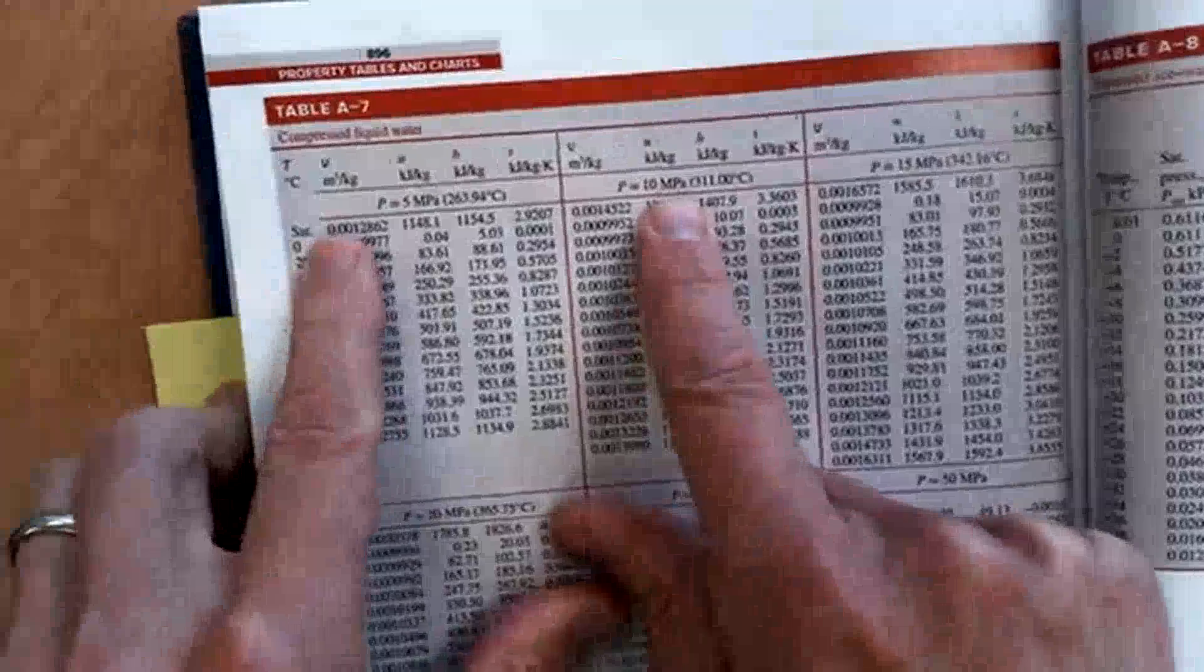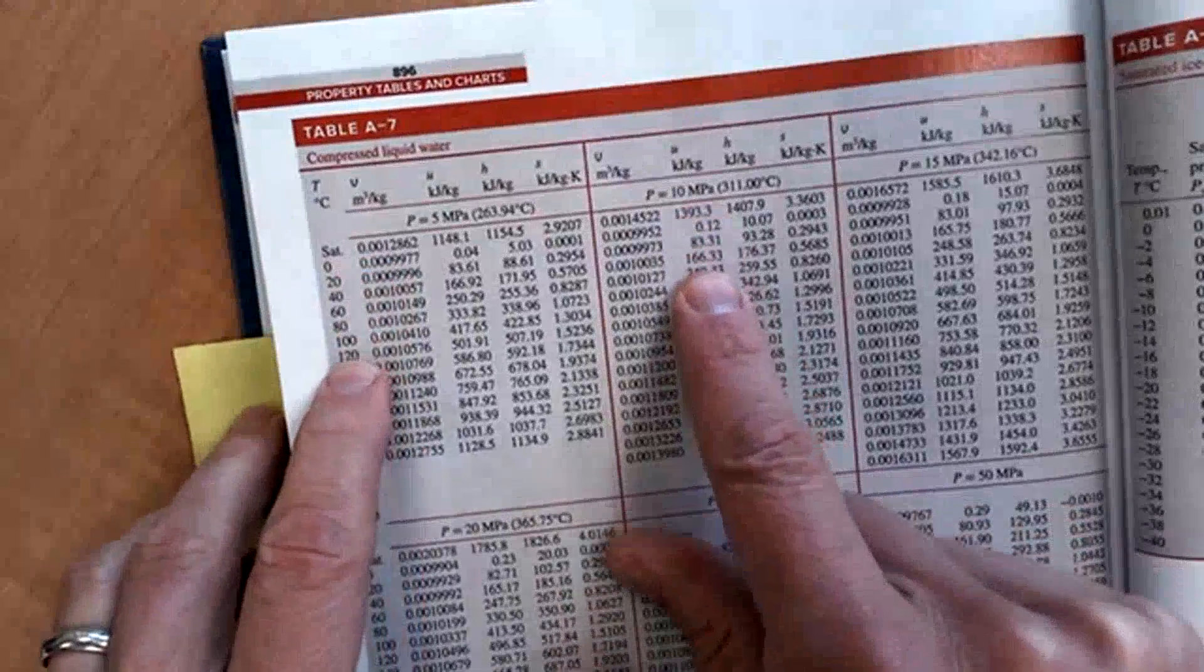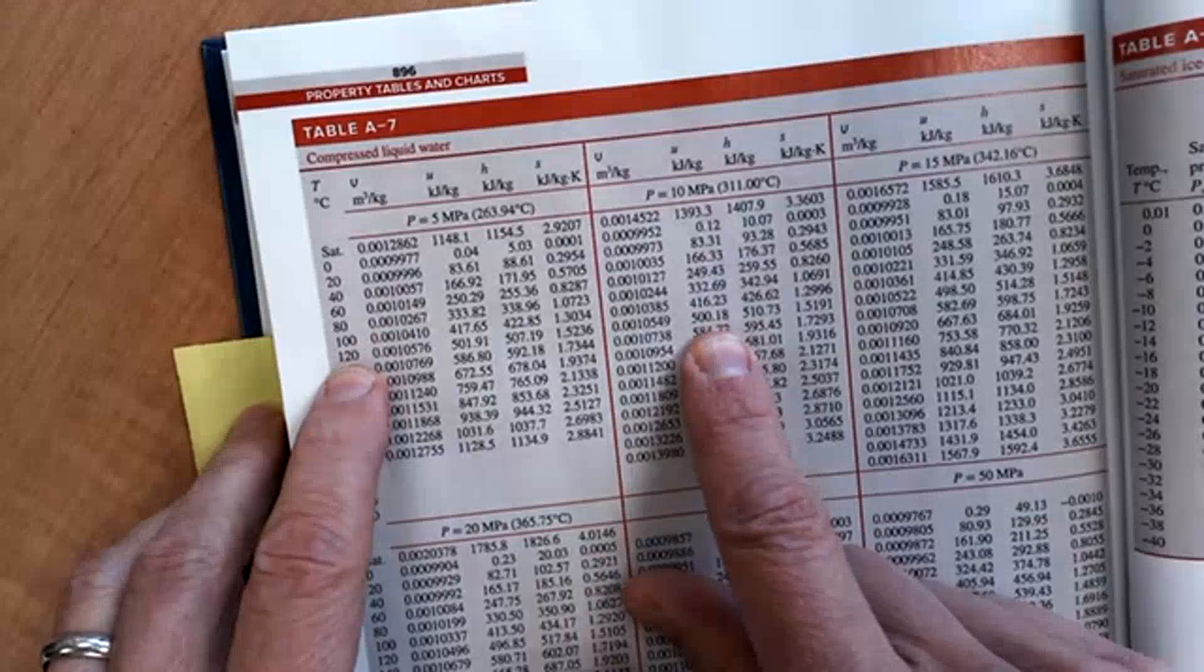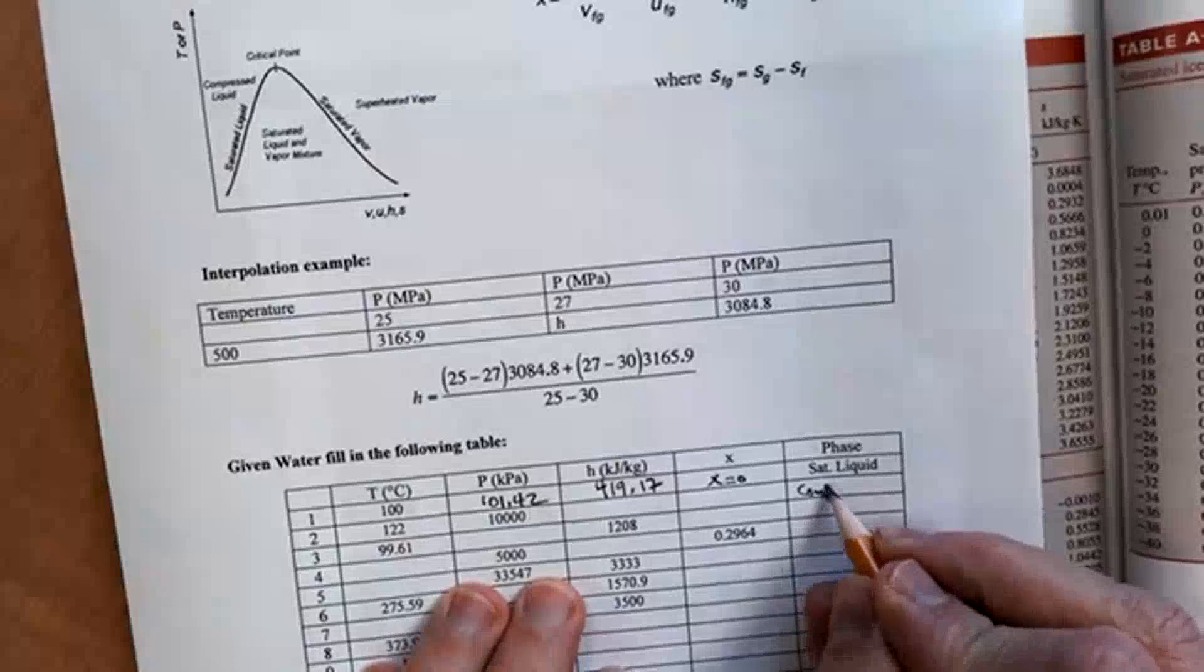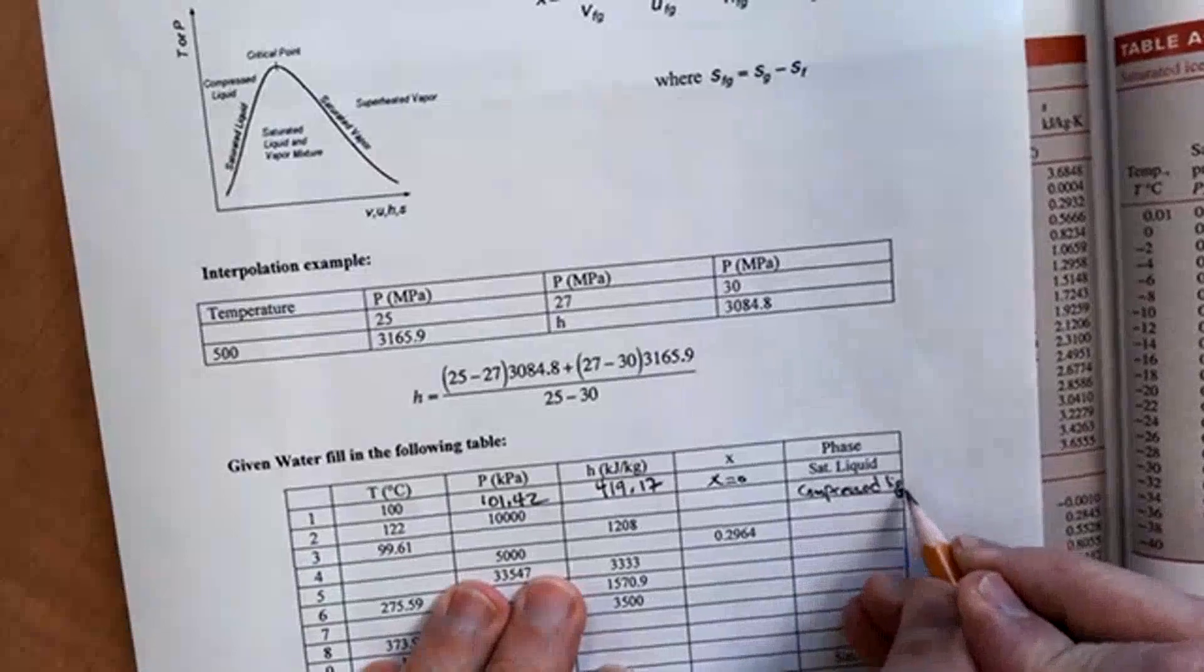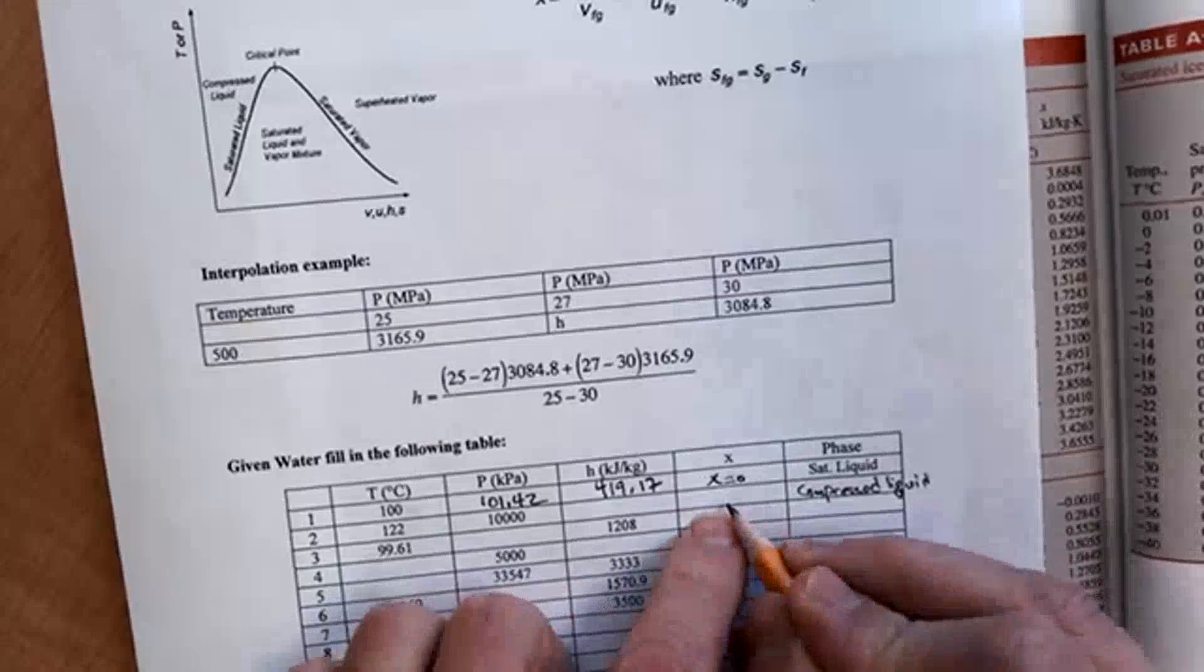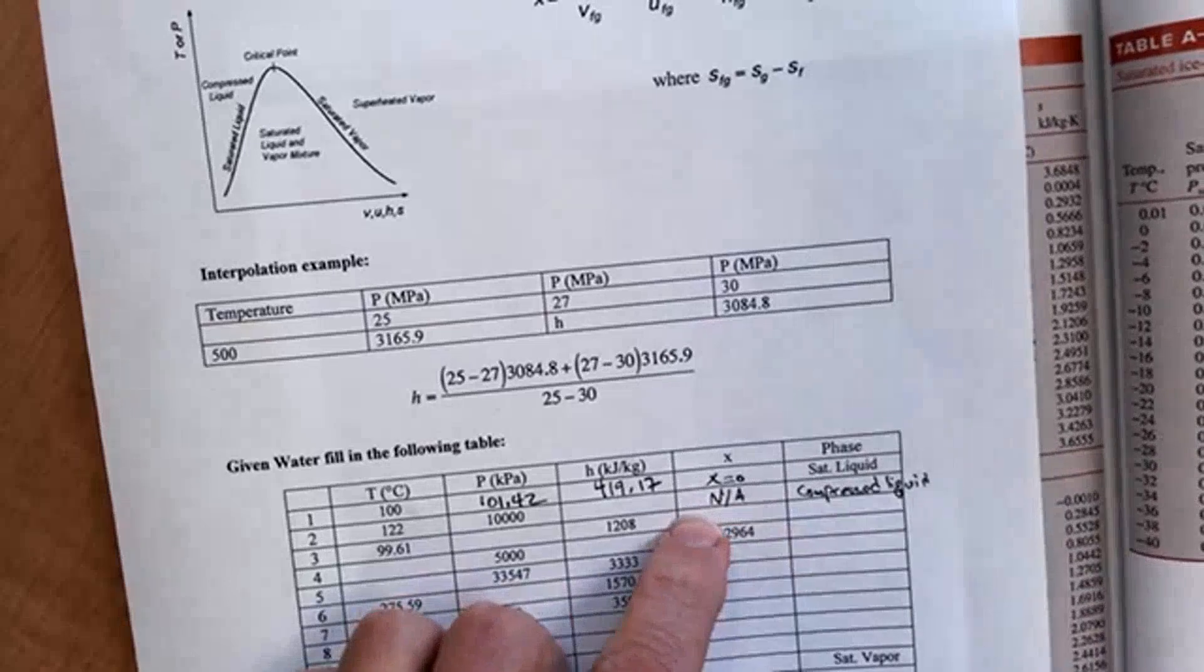And if I look at this line, 122. Yeah, it's going to be right in there somewhere. So right away, I can write down that this is a compressed liquid. I also know then the quality, which is not applicable because in the compressed liquid side.